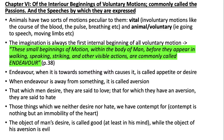He says that animals have two sorts of motions peculiar to them: vital — such as involuntary motions like the course of blood, the pulse, and breathing — and animal or voluntary, such as making speech and moving limbs. He says that imagination is always the first internal beginning of all voluntary motion. These small beginnings of motion within the body of man, before they appear in walking, speaking, or striking, are commonly called endeavour. Endeavour when it is towards something which causes it is called appetite or desire, and when endeavour is away from something it is called aversion. That which men desire they are said to love, and that for which they have an aversion they are said to hate.